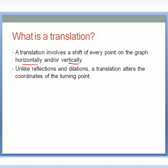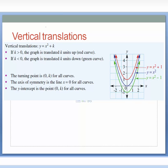Let's look at vertical translations. To work out what the vertical translation is, I look at y equals x squared plus k — it's the k value that does the translation vertically. If the k value is greater than 0, it shifts up that many units. So with y equals x squared plus 1, that shifts the parabola — whose turning point is 0 comma 0 — up one unit.